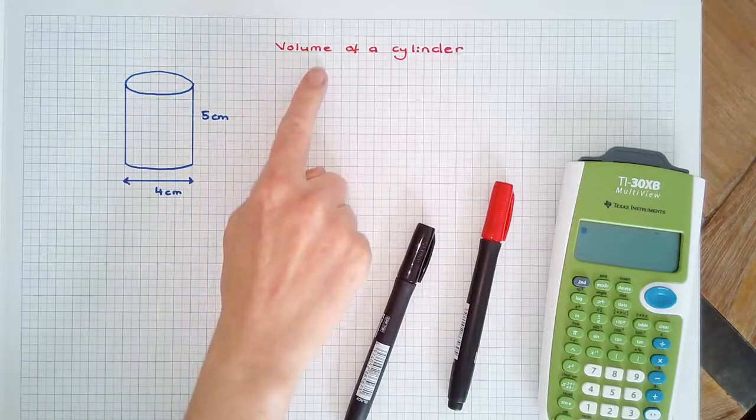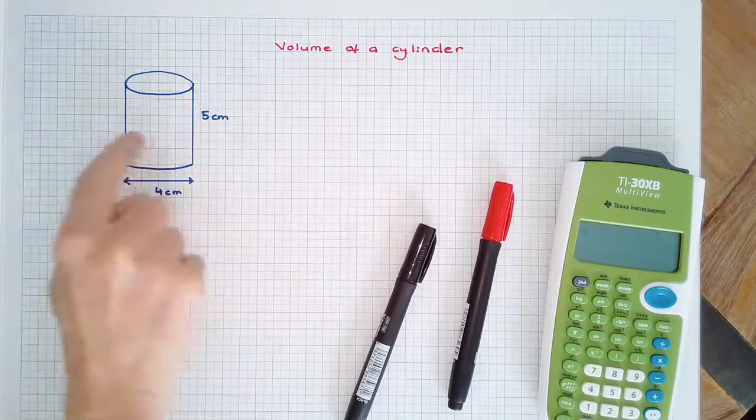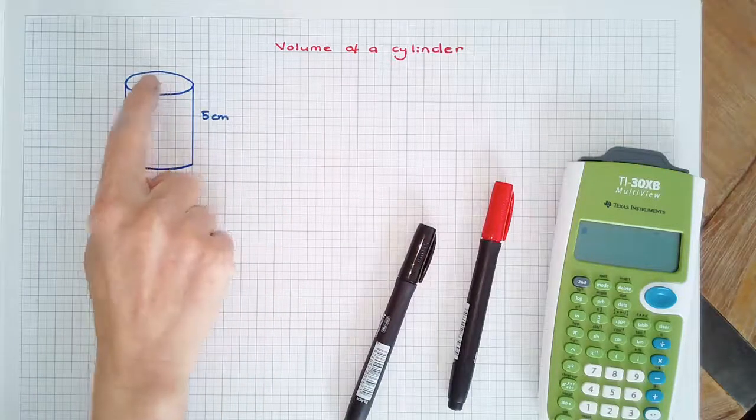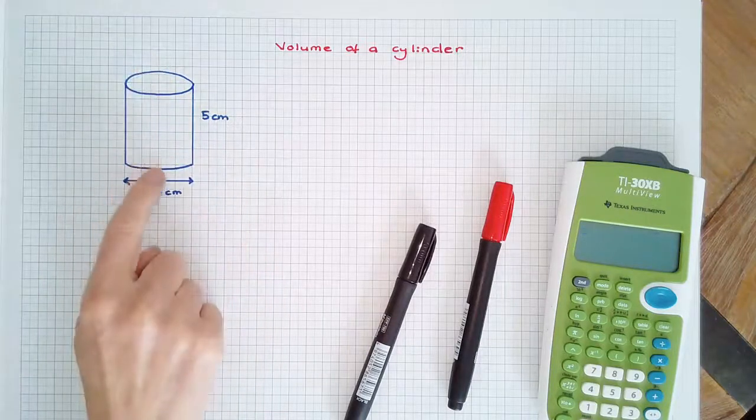In this video we're going to have a look at the volume of a cylinder. If we slice a cylinder parallel to its base, each cross section is a circle the same size as the top and the bottom.